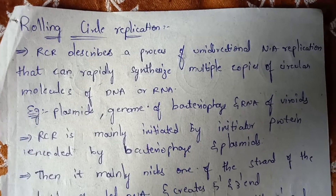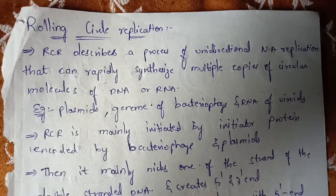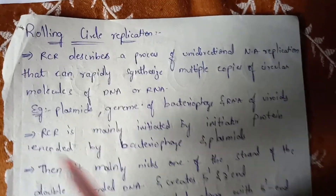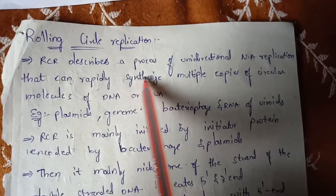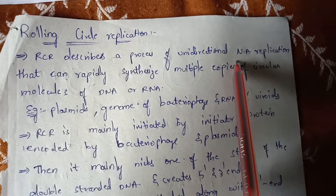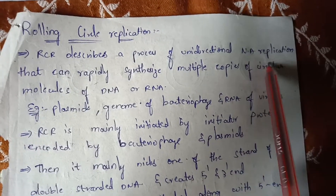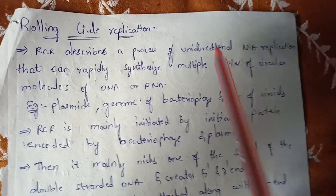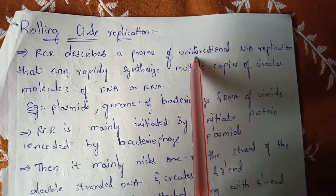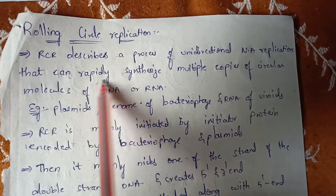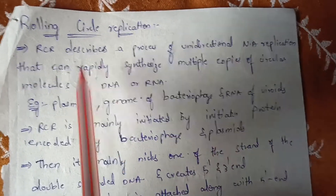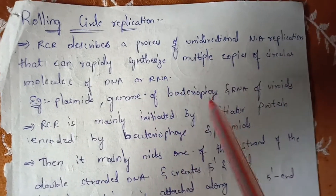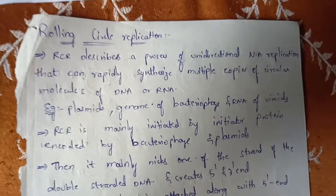The second type is rolling circle replication, abbreviated as RCR. RCR describes a process of unidirectional nucleic acid replication that can rapidly synthesize multiple copies of circular molecules of DNA or RNA. Examples include plasmids, the genome of bacteriophage, and RNA of viroids.